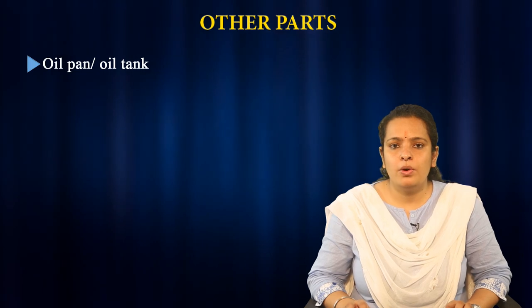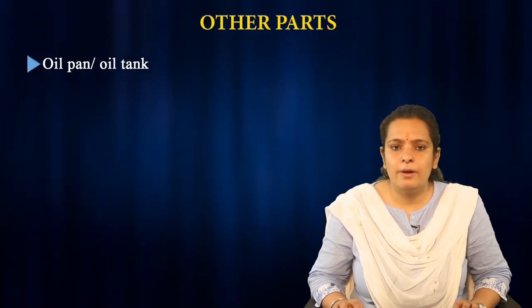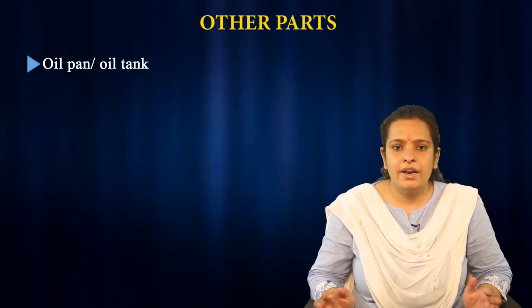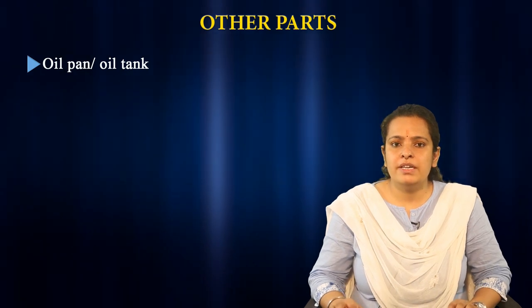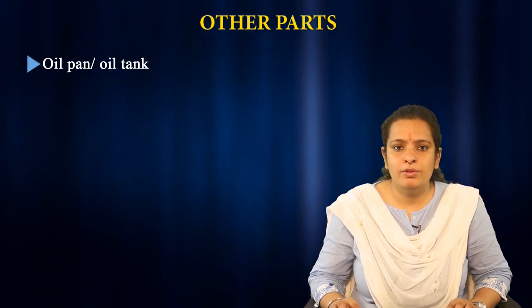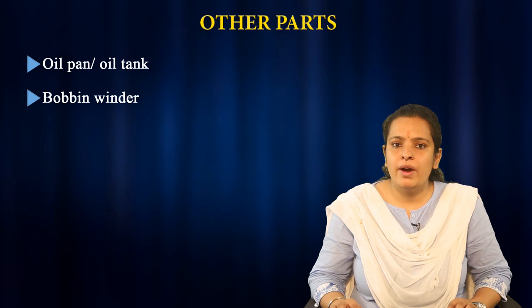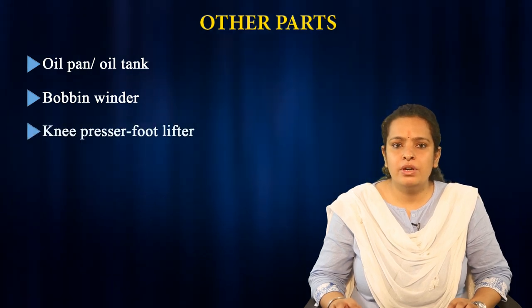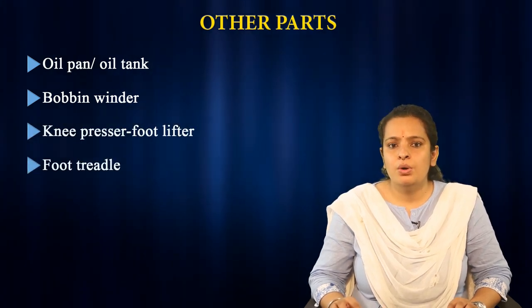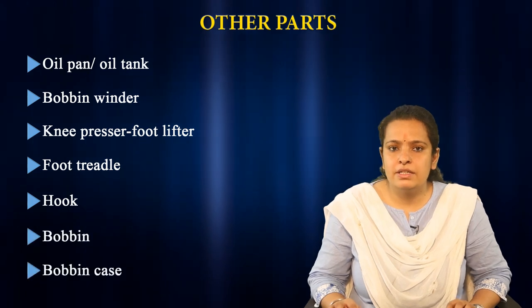Other important parts of the machine include the oil pan or oil tank where oil is put to keep the machine operating smoothly, the bobbin winder, knee pressure foot lifter, foot treadle, hook, bobbin, and bobbin case. These are the other parts of the machine which you should keep in mind when operating the sewing machine.